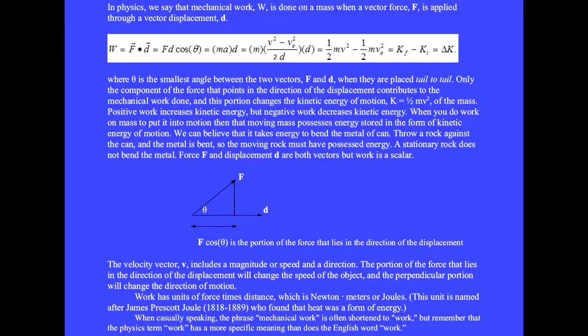In physics, we say that mechanical work W is done on a mass when a vector force F is applied through a vector displacement d. The definition is W equals F dot d equals Fd cosine theta, where theta is the smallest angle between the two vectors F and d when they are placed tail to tail.